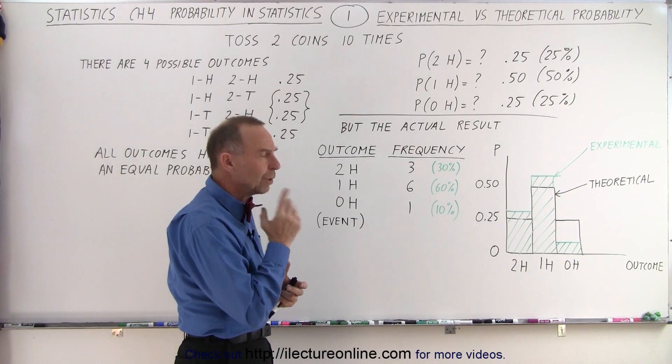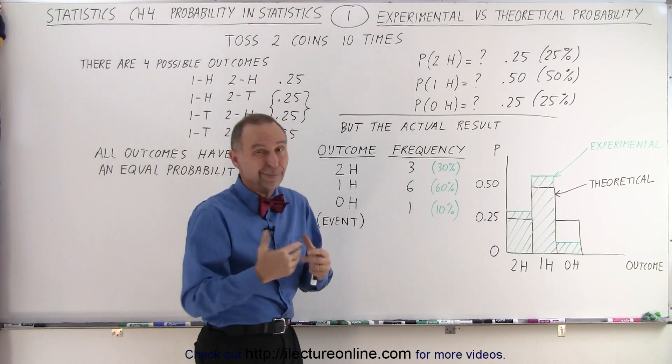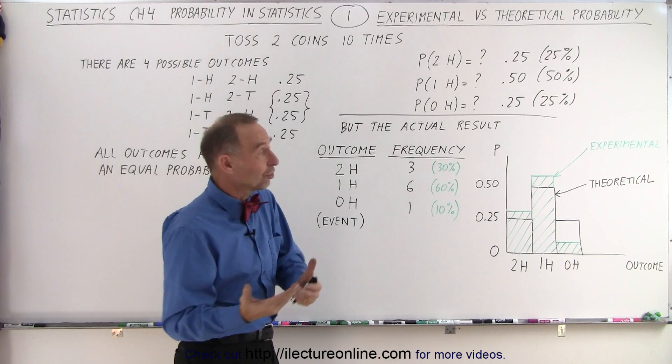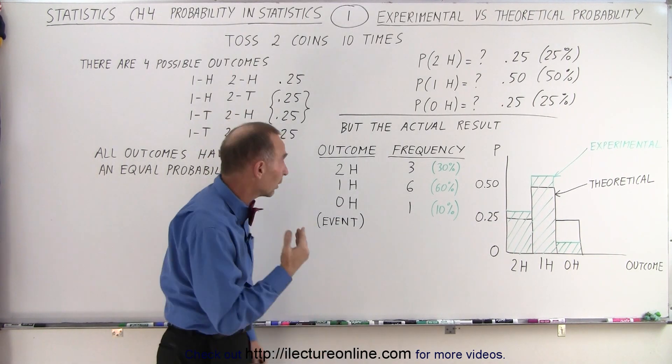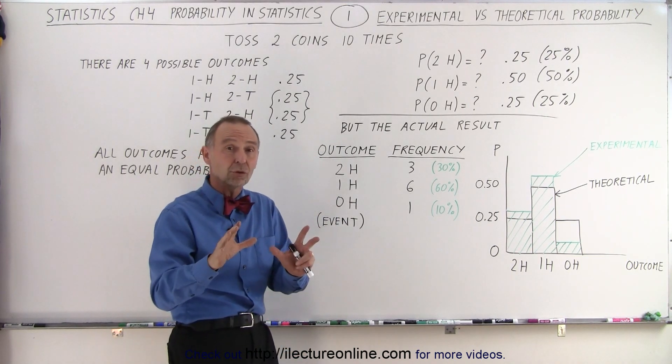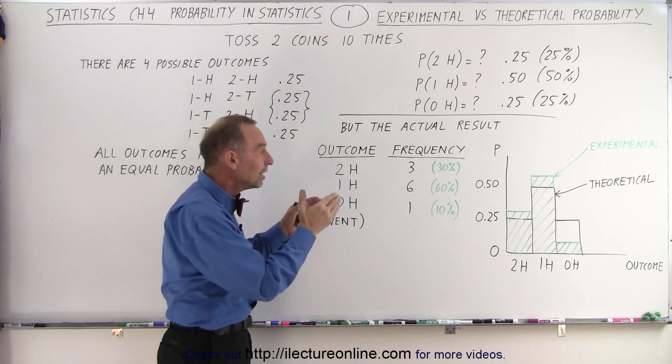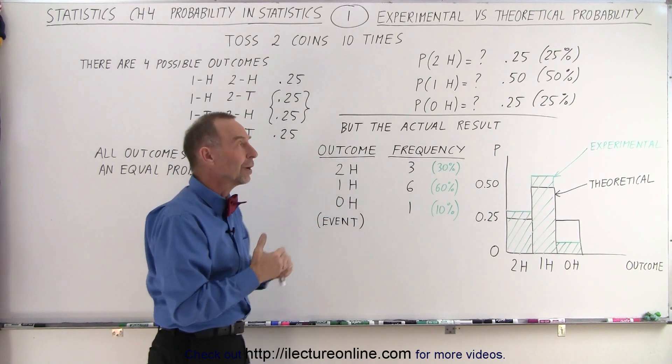Well, what should we do to get the theoretical results to be closer to the experimental results, or, better said, the experimental results to be closer to the theoretical results? Well, maybe, instead of only doing it 10 times, we should have done it 1,000 times. Maybe just 100 times, but to be sure, 1,000 times. Would the actual results be much closer to the theoretical results? They probably would be.